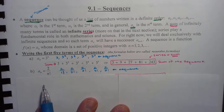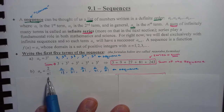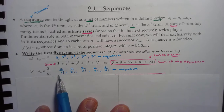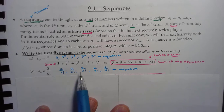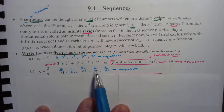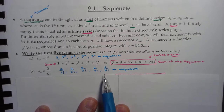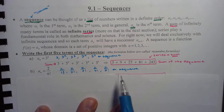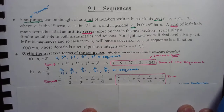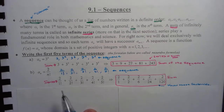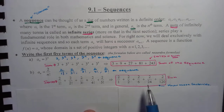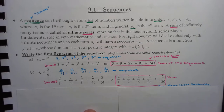If we look at A sub n being 2 over n factorial, that's 2 over 1 factorial, 2 over 2 factorial, 2 over 3 factorial, 2 over 4 factorial, 2 over 5 factorial. That is your sequence. Your series is your sum of the sequence.